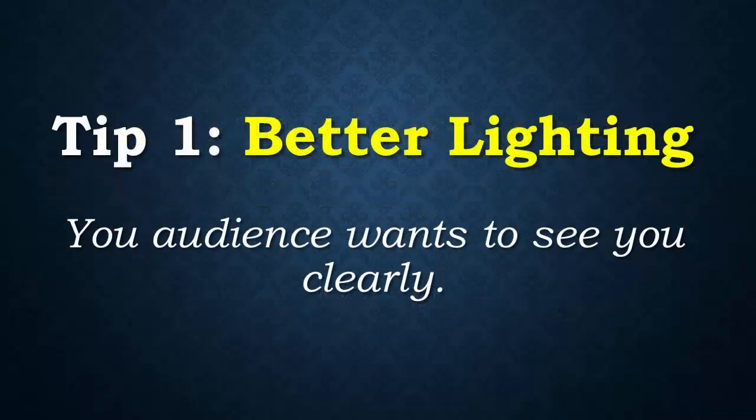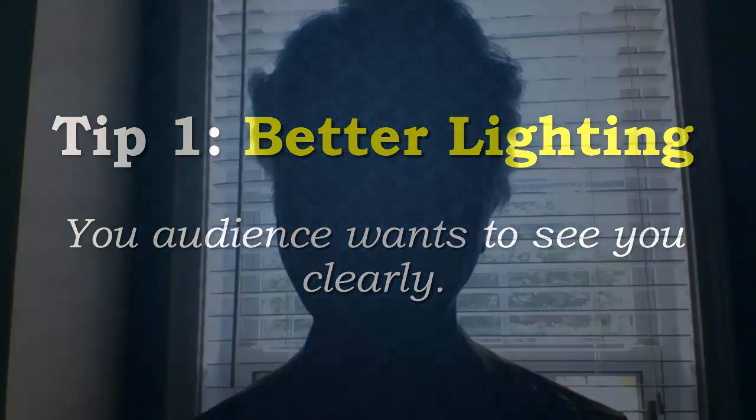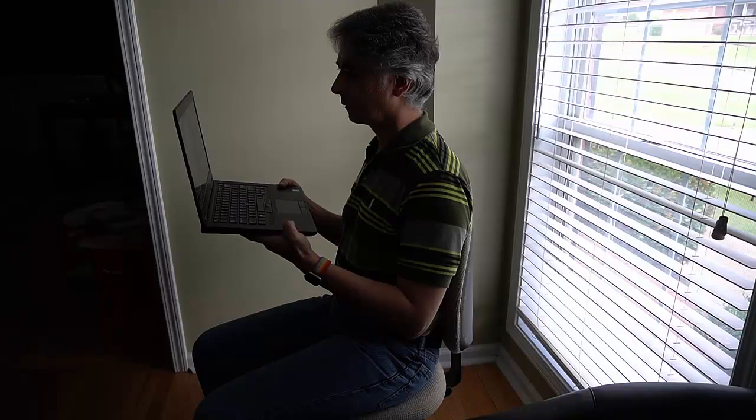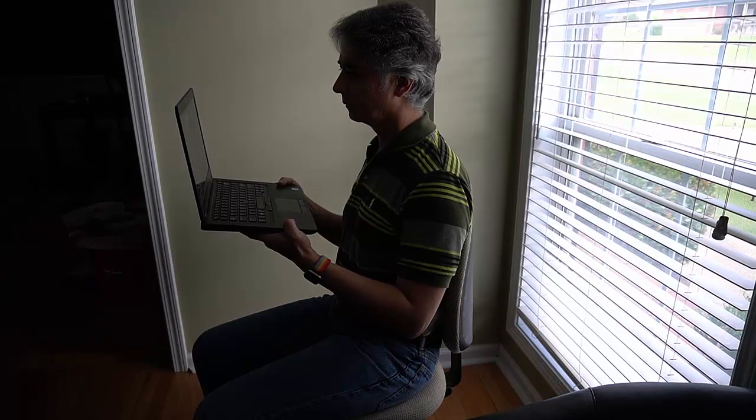Let's start with lighting. You want your audience to be able to see you clearly. The webcam in your computer works automatically, but it can use your help. How many of you have joined a teleconference only to find that you look like this? This is an example of backlighting — the webcam is setting its exposure to the bright sunlight from the window behind you, leaving your face in the dark.